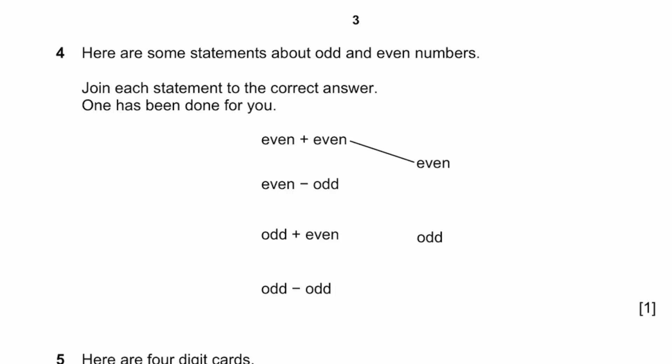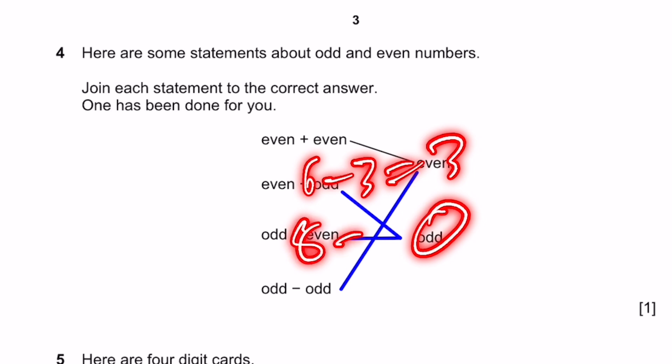Question 4. Here are some statements about odd and even numbers. Join each statement to the correct answer. Even plus even is even. Even minus odd is always odd. Odd plus even is always odd. And odd minus odd is always even. You can try that with examples if you want. For example, even minus odd. We can say 6 minus 3, which equals 3. Odd. 8 minus 5, which equals 3. Odd.